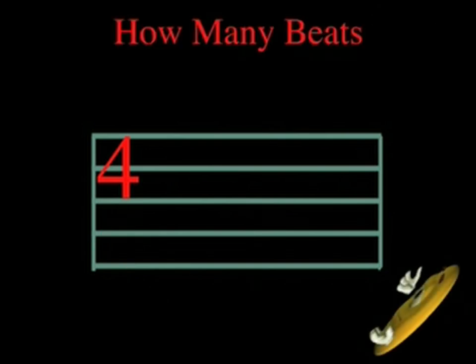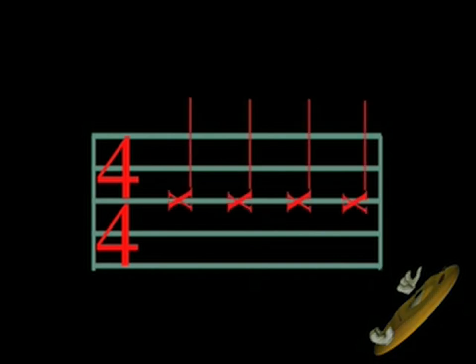Let's look at the top number first. The top number tells us how many beats there are in a measure. In our 4 4 example, there are 4 beats in a measure. In our 3 2 example, there are 3 beats to a measure, and so on.